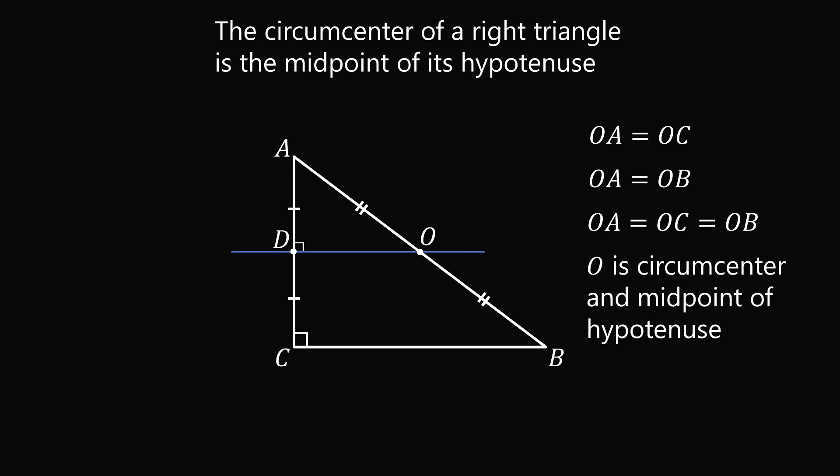Therefore, O is the circumcenter of triangle ABC and the midpoint of the hypotenuse.